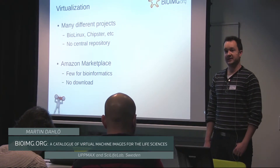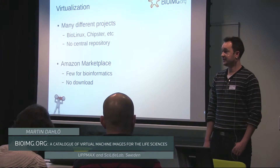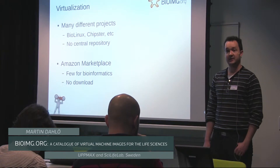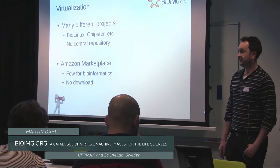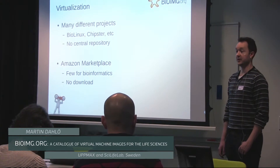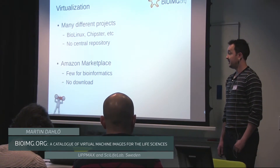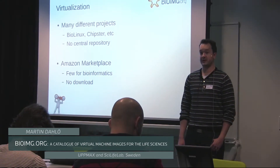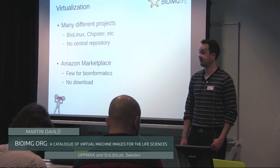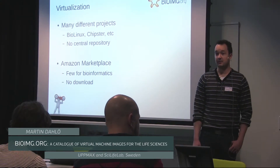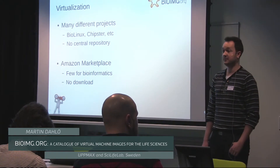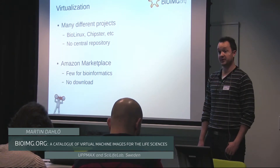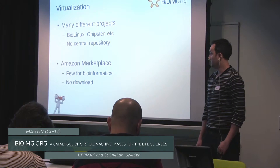One downside with virtualization is that there are many different projects doing this. With BioLinux, Chipster has a virtual image, Cloud Gene also has a virtual image. They're all distributed on different sites, so there's no one central repository where you can go and download these images. Places like Amazon Marketplace have a large collection of images — you can search for bioinformatic images and find BioLinux. But the downside is that you have to fire them up on Amazon; you can't just download the file and start it on your local computer.